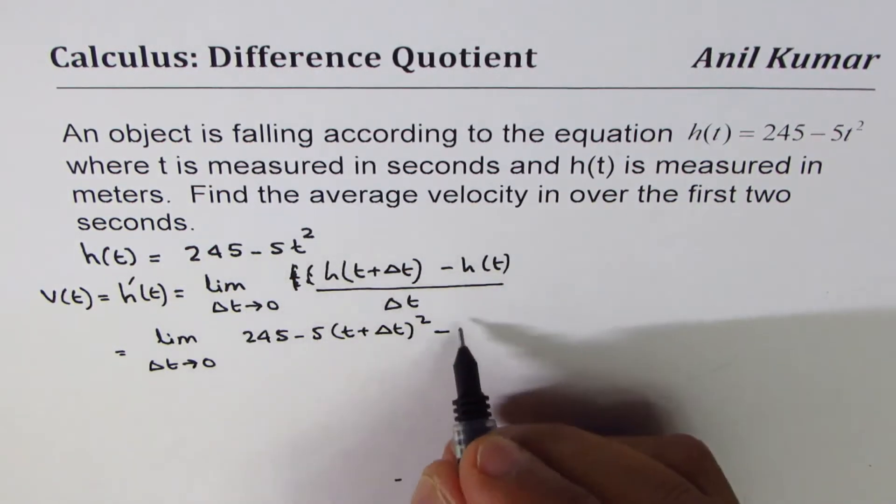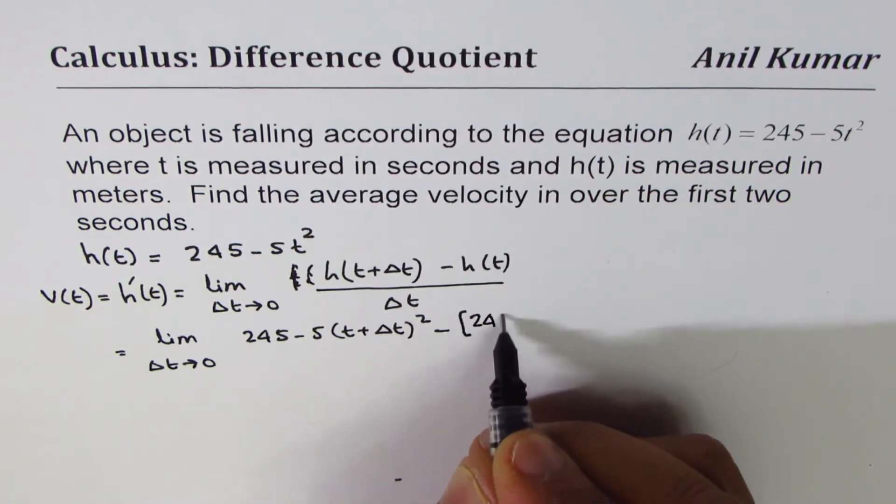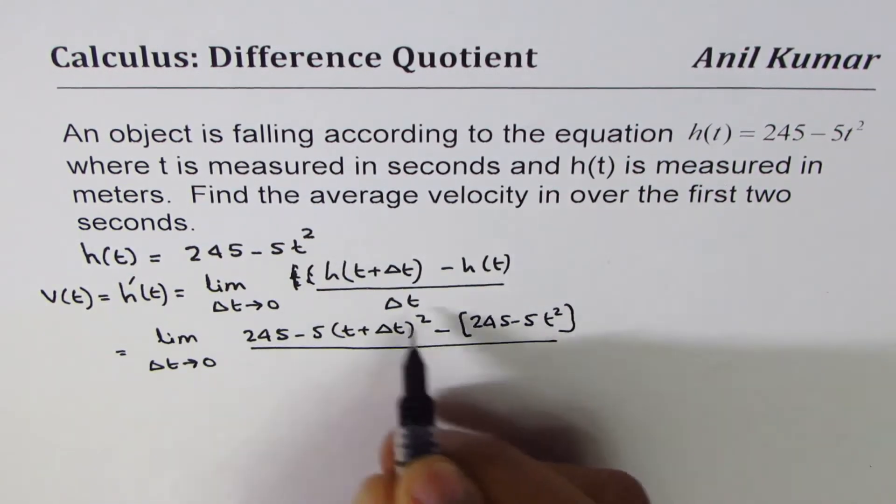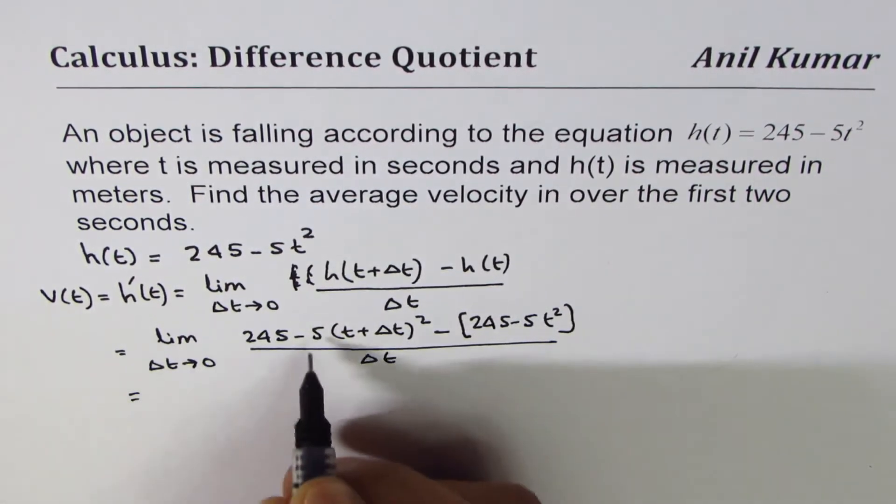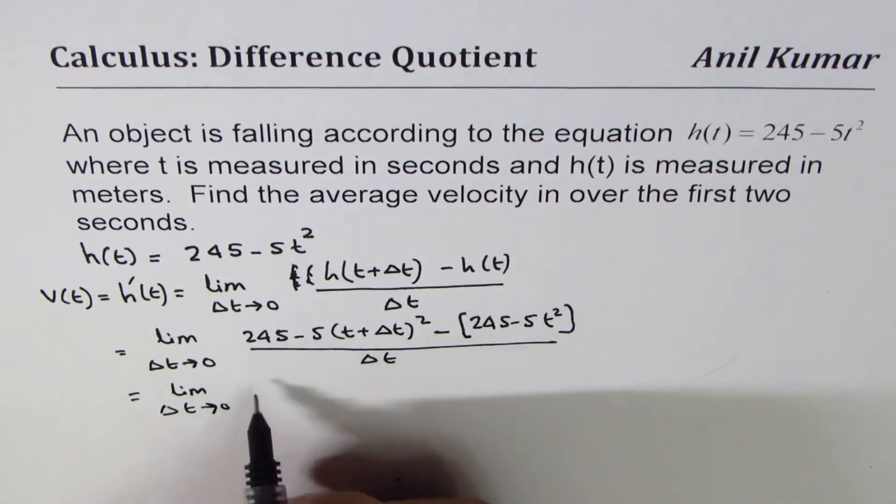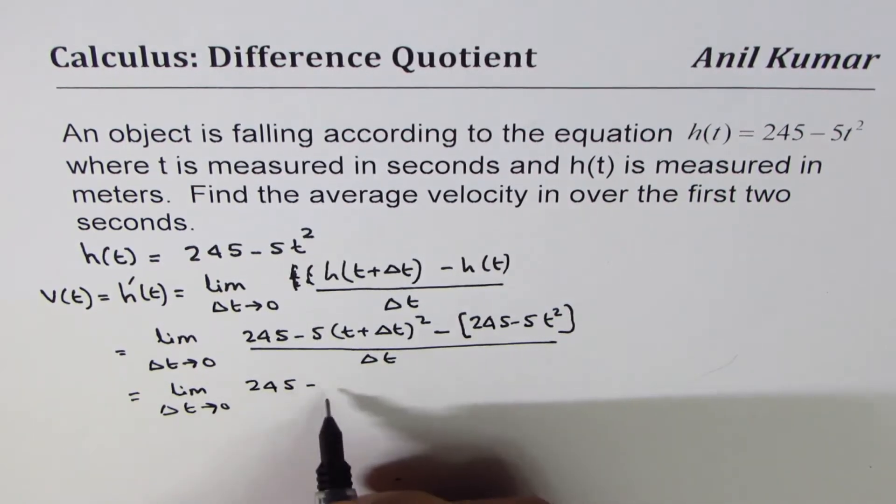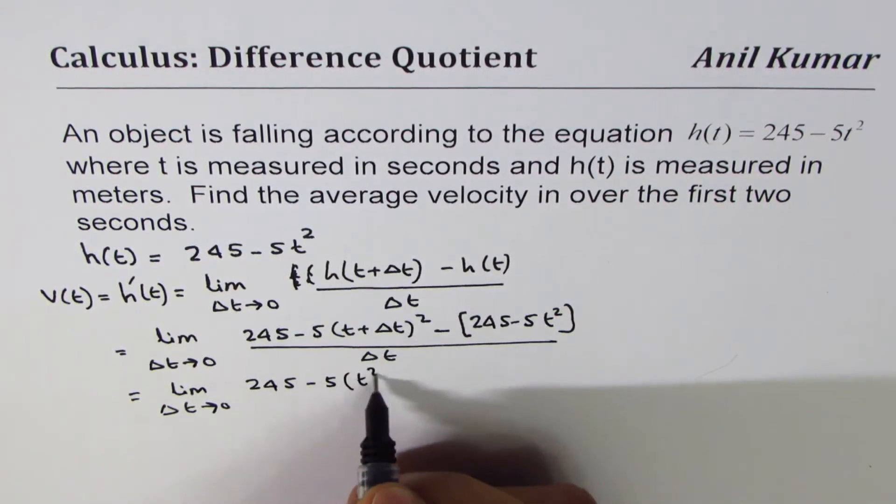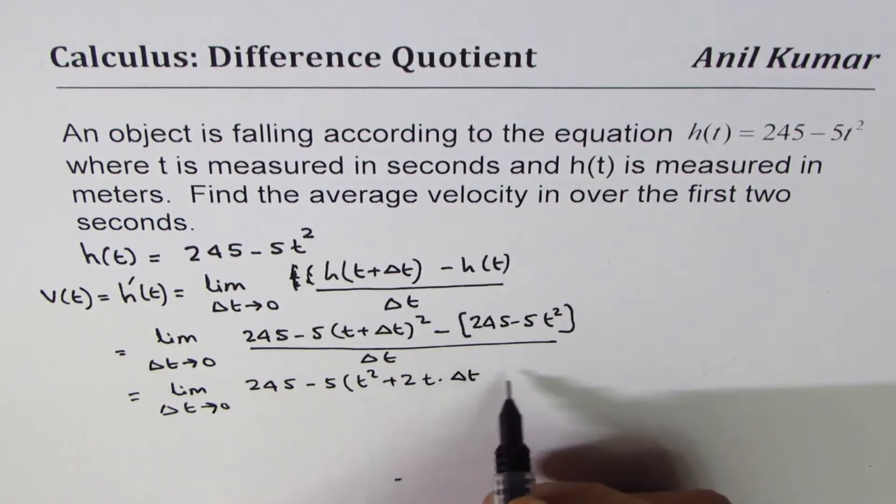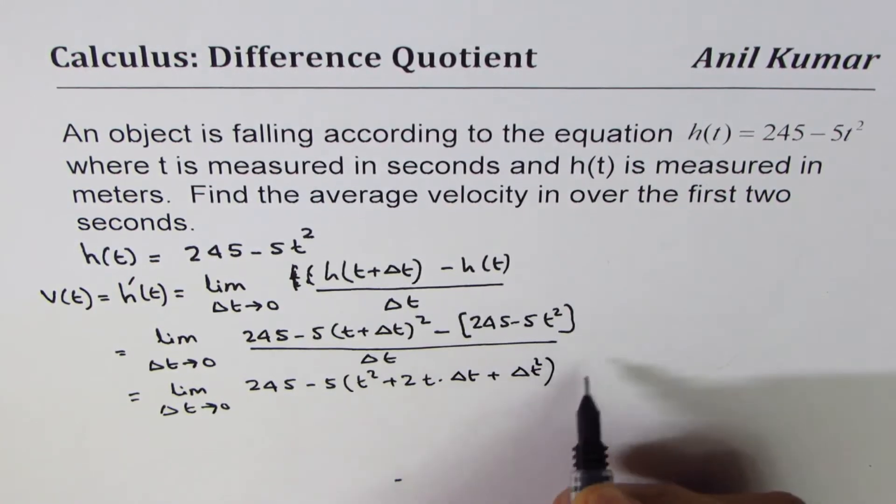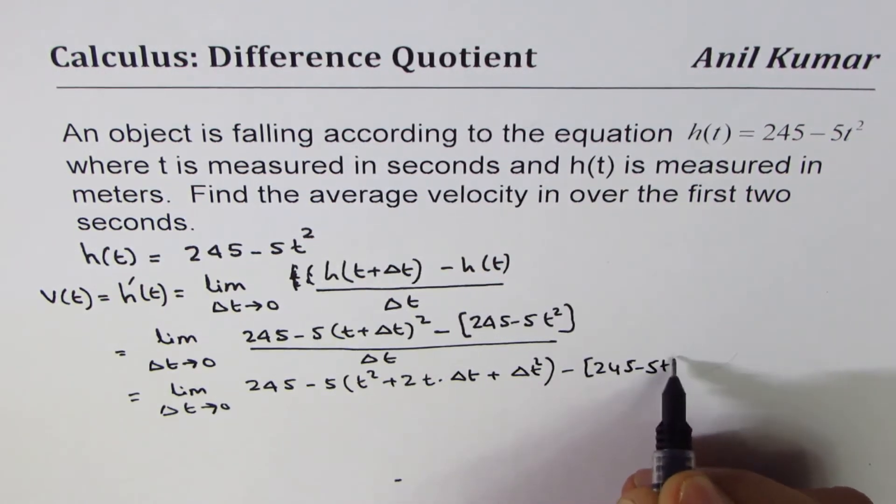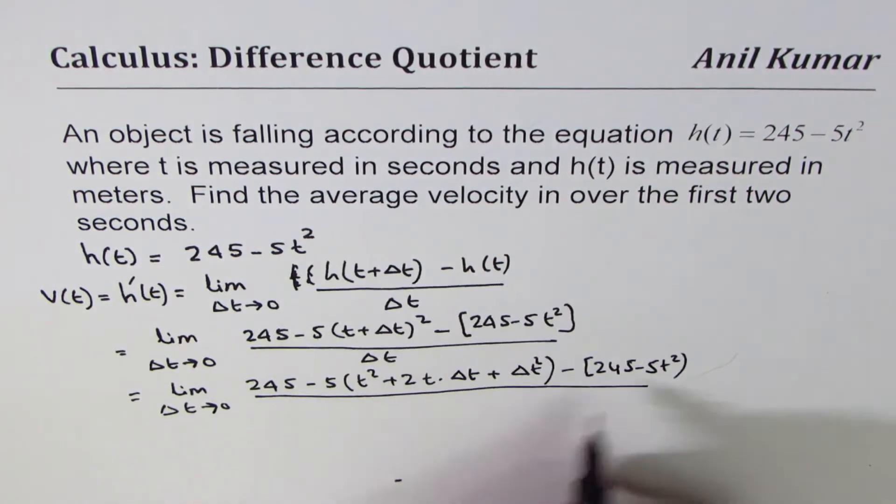Minus h(t) is 245 - 5t², divided by Δt. So let's expand. We get limit Δt approaches 0. 245 - 5 times (t² + 2t·Δt + Δt²) - 245 + 5t², divided by Δt.